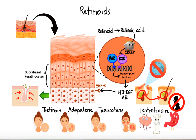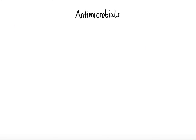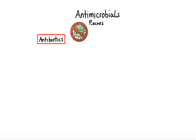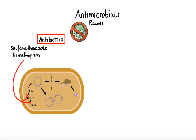Now let's move on to our second group of drugs used in treatment of acne, that is antimicrobials. Drugs that belong to this group target P-acnes, a gram-positive bacterium that is involved in the pathogenesis of acne. The drugs of choice for this are antibiotics. The most commonly used antibiotics for acne include sulfamethoxazole and trimethoprim, which block two consecutive steps in the biosynthesis of tetrahydrofolate that is needed by bacterial cells for eventual production of DNA, RNA, and amino acids.